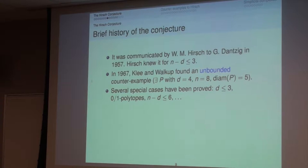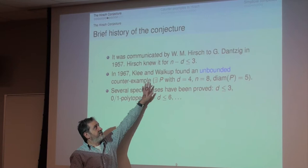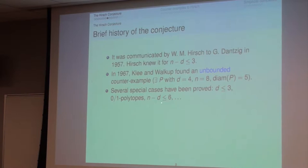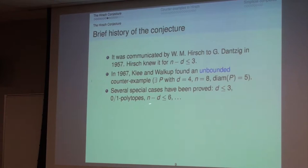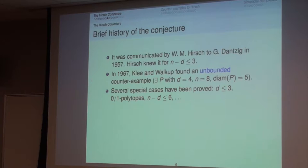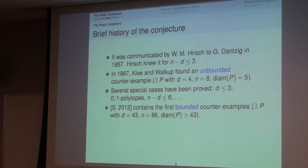Several special cases have been proved: in dimension 3 the conjecture is true; for polytopes with 0-1 coordinates it's true; for polytopes with n minus d at most 5, proved by Klee and Wolkopf in 1967; and for n minus d equals 6, a recent result around 2008 involving some computer exploration. Then in 2012, I found the first counterexamples.